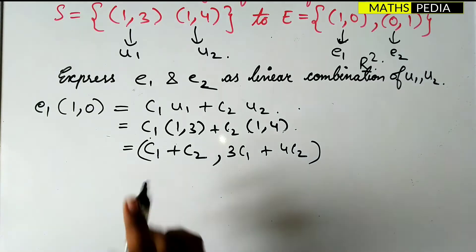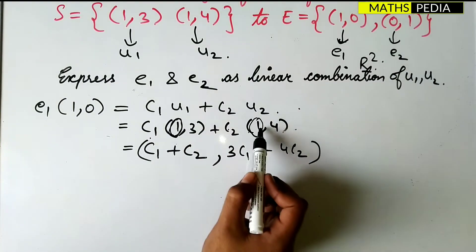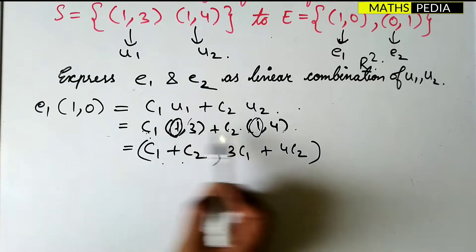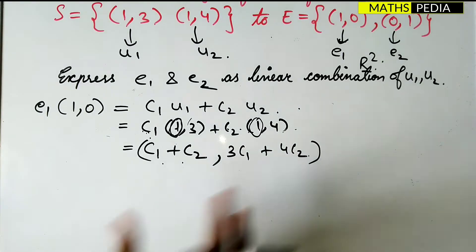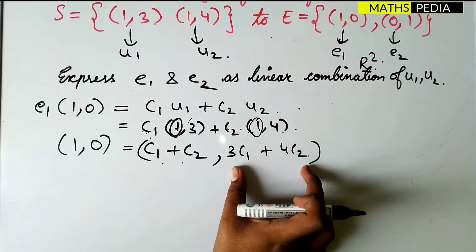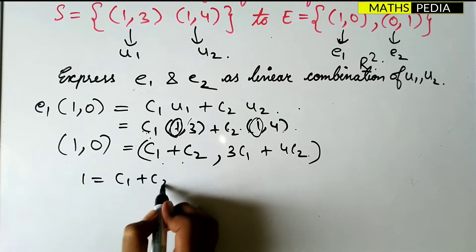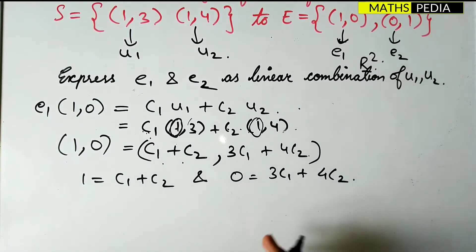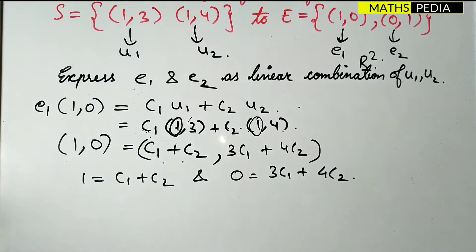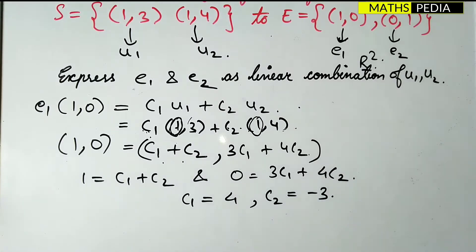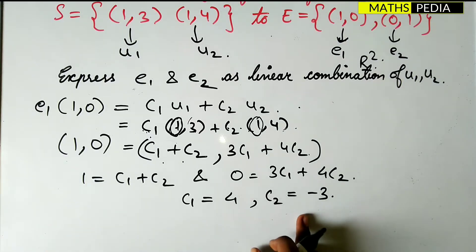The first component gives c1 + c2 = 1 and the second gives 3c1 + 4c2 = 0. Solving these two equations — you can calculate using a calculator — gives c1 = 4 and c2 = −3.